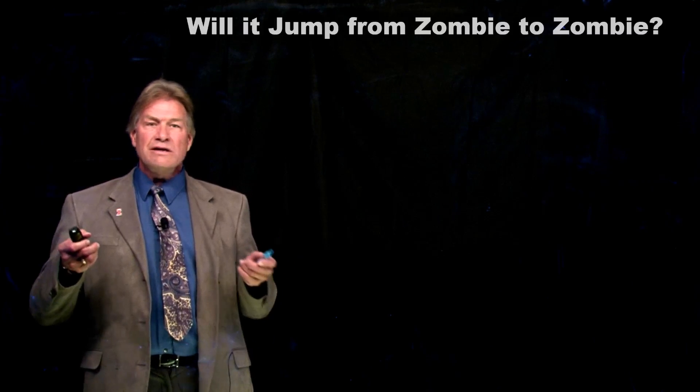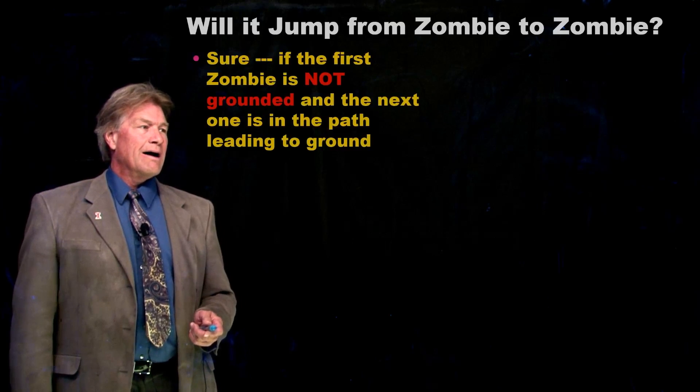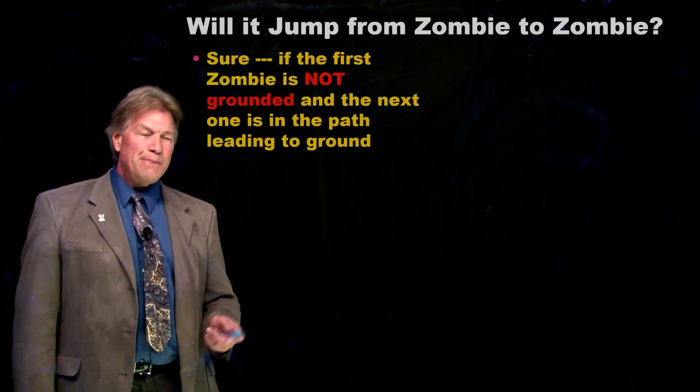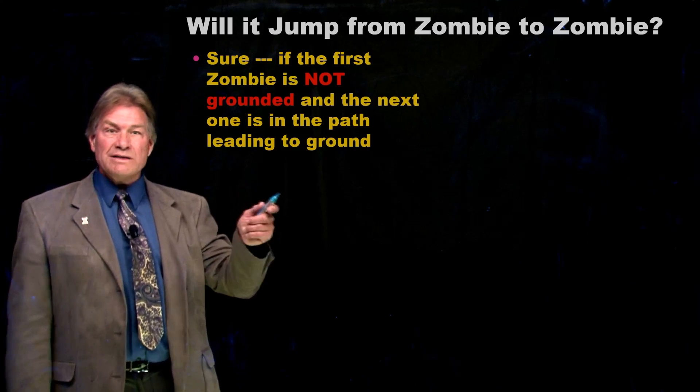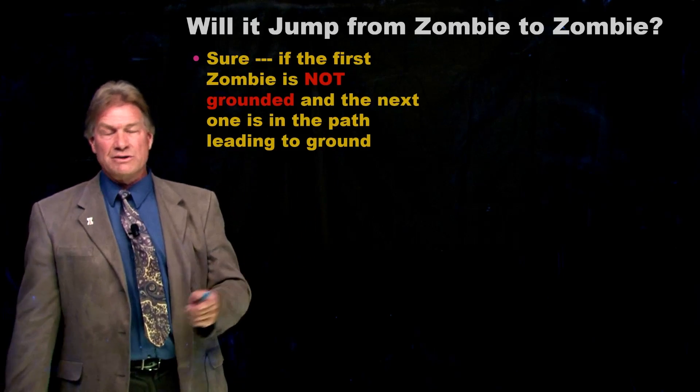Now, it wasn't that cool. So, we've got a gun and we know what it's made of, plasma, and how to get it there. But, will it jump from zombie to zombie? Probably not. But, it could if the first zombie wasn't grounded and then the next zombie along the line was grounded.